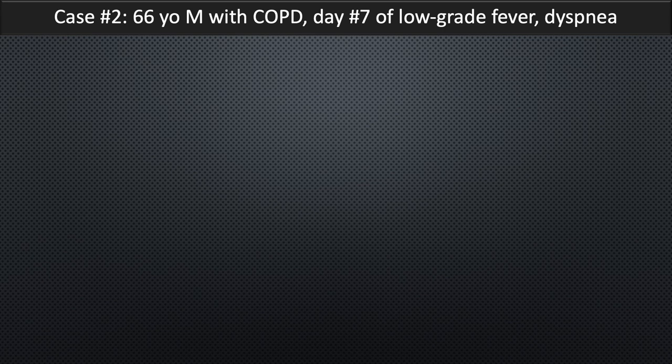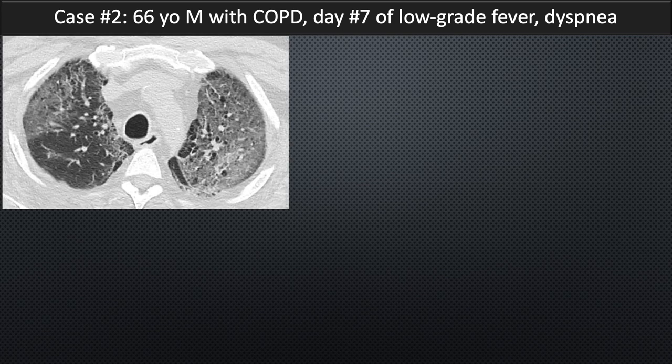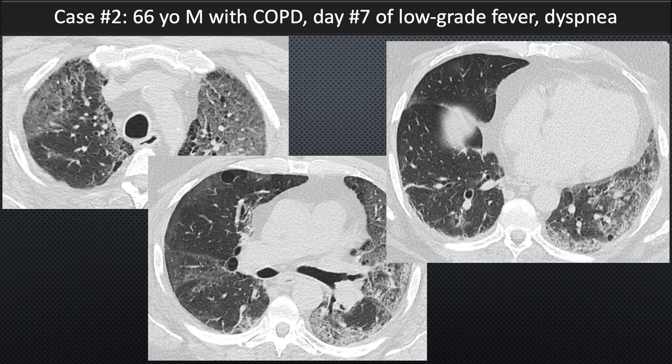Case 2: a 66-year-old male with COPD, day seven of low-grade fever and dyspnea. A CT of the chest shows not only underlying emphysema — paraseptal and centrilobular — but also extensive multifocal confluent ground glass opacities bilaterally. This is another pattern that can be seen with COVID-19 associated pneumonia. The patient was tested and the PCR came back positive for COVID-19, confirming the diagnosis.